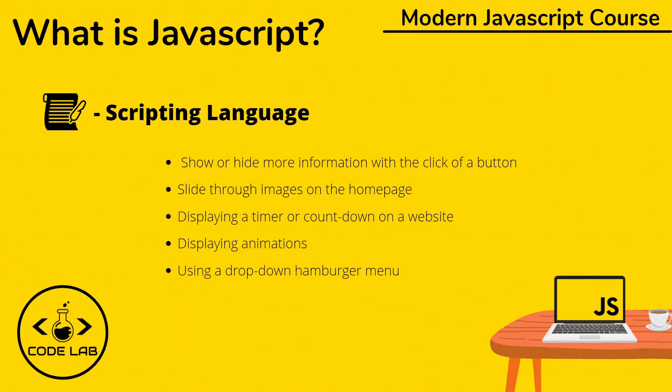Now, what exactly is JavaScript? JavaScript is a scripting language, and scripting languages are coding languages used to automate a process that users would otherwise need to do on their own. So if we had no scripting, any changes on a website you visit would actually require you to manually reload that page. Essentially, JavaScript does the heavy lifting by telling computer programs like websites or web applications to do something.